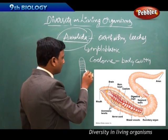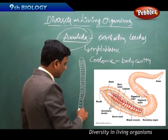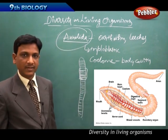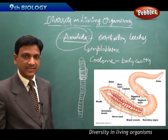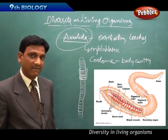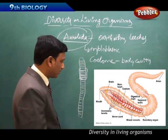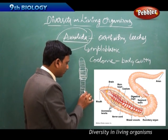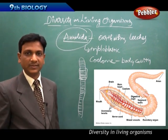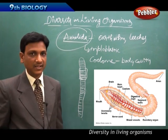If you observe an earthworm, you can find ring-like markings on its body — showing that the body is divided into many segments. The body is cylindrical with a true coelom inside. Annelida are triploblastic and show organ differentiation, with reproductive and excretory organs located in particular segments.